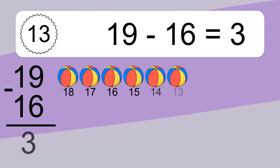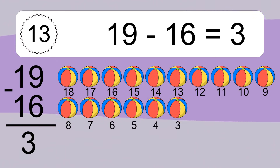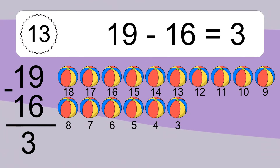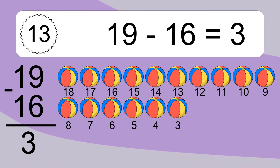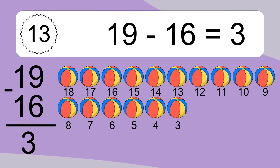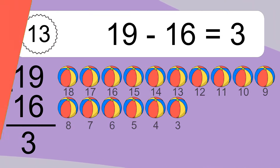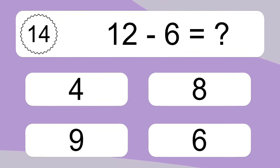19 minus 16 equals what? 19 minus 16 equals 3. Let's count it: 18, 17, 16, 15, 14, 13, 12, 11, 10, 9, 8, 7, 6, 5, 4, 3.